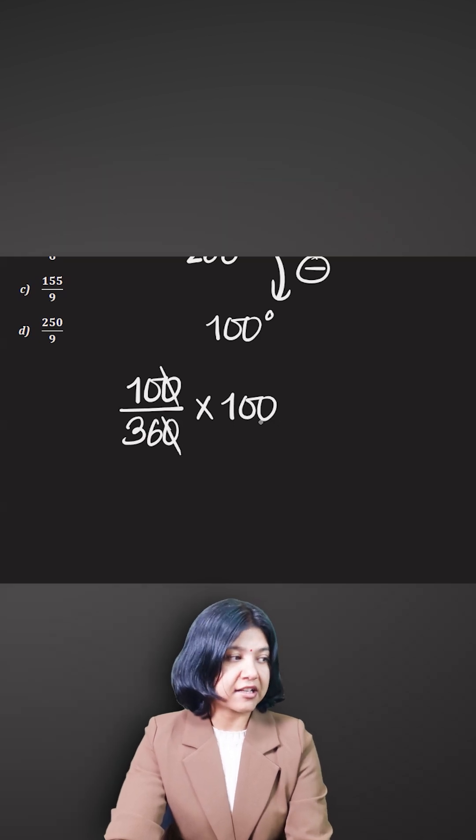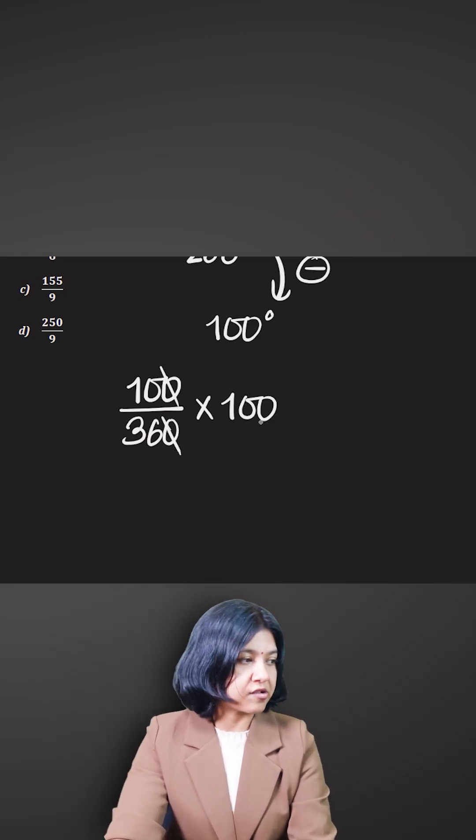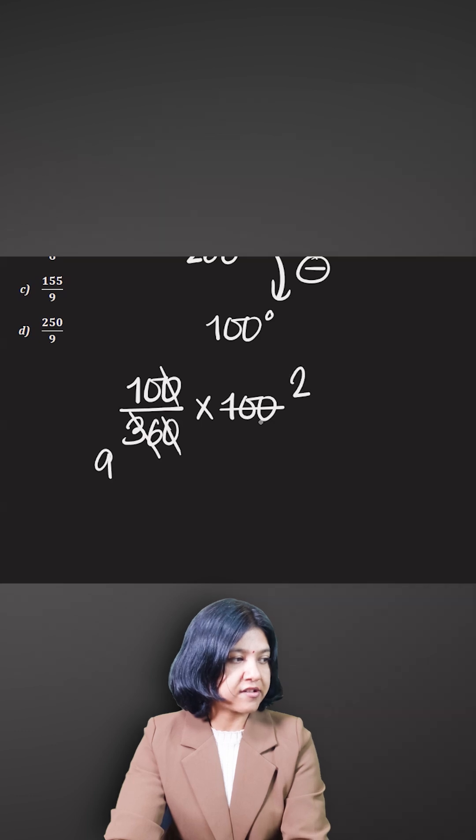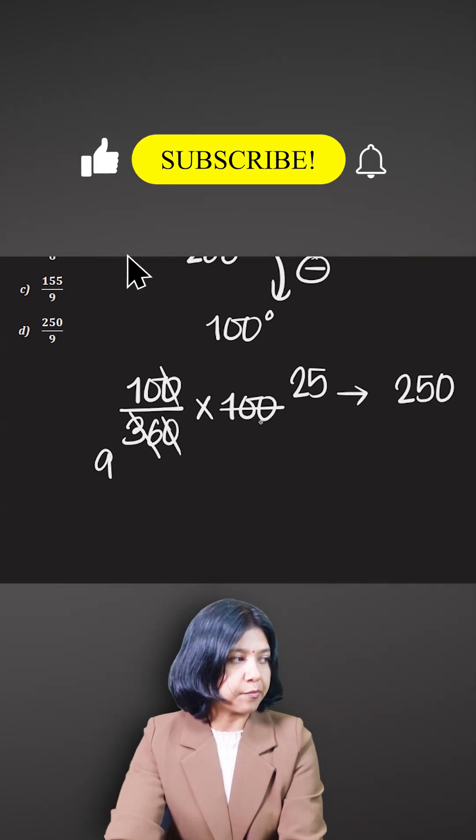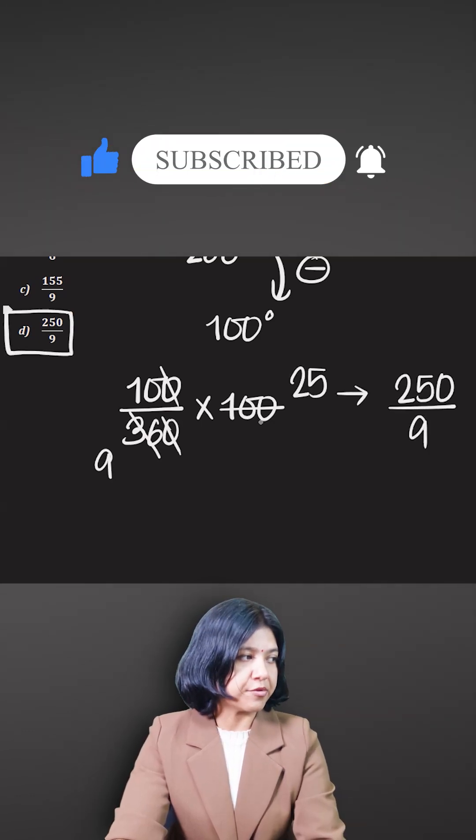So it's pretty easy. You can just do your calculation. Four times nine is 36, four times 25 is 100. So what we get is 250 upon nine. The answer is option D.